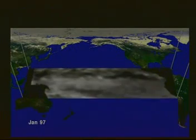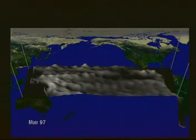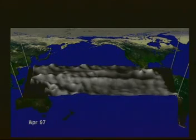First, we look at sea surface height. The gray sheet rises and dips as much as 30 centimeters from normal.